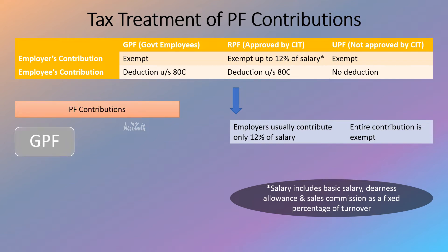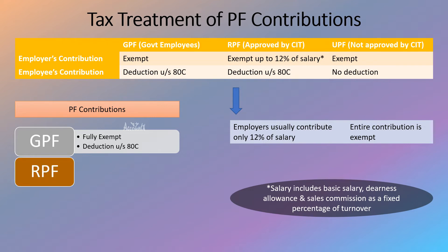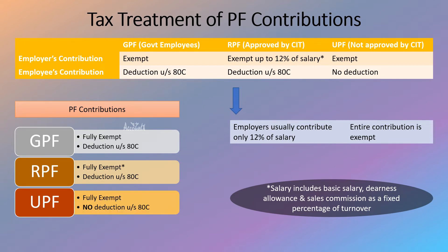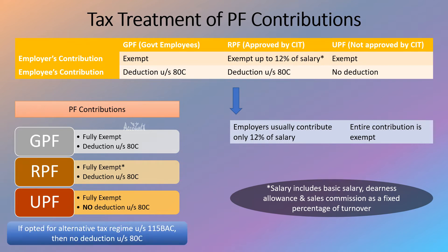To summarize: for GPF, employer contributions are fully exempt and employees can avail deduction under Section 80C. For RPF, employer contributions are fully exempt up to 12% of salary, and Section 80C deduction is available for employee contributions. For UPF, employer contributions are fully exempt but employees cannot avail deduction under Section 80C. However, if you have opted for the alternative tax regime, you will not be able to avail deduction under Section 80C regardless.